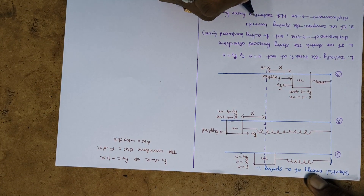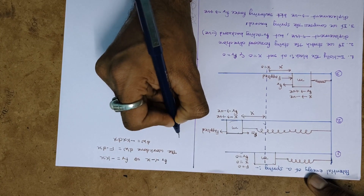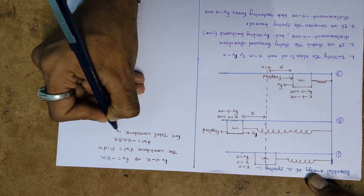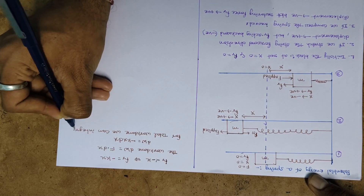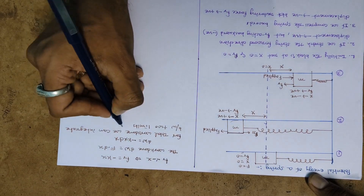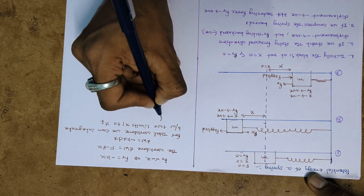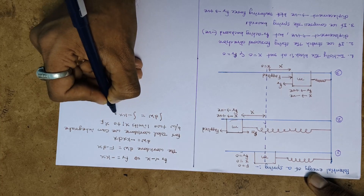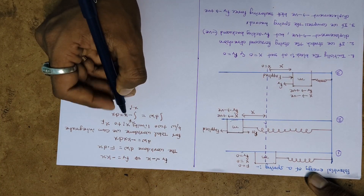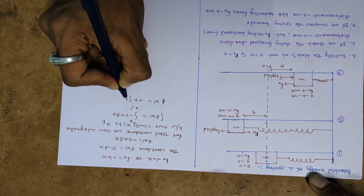This is the small work done. For total work done, we integrate between two limits — from initial displacement x_i to final displacement x_f. So the integral of dW equals the integral of minus kx dx from x_i to x_f. Taking the constant term outside: W equals minus k times the integral of x dx.